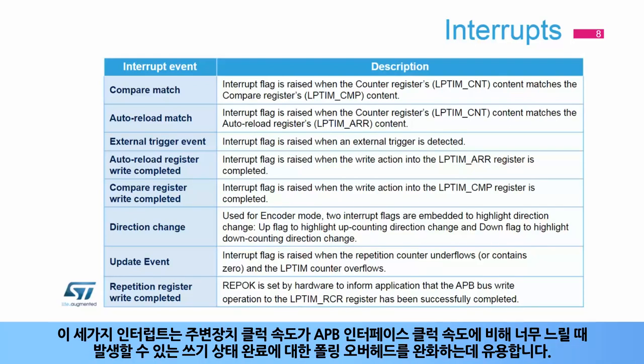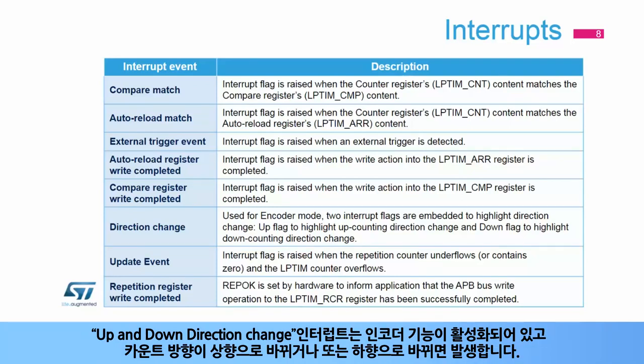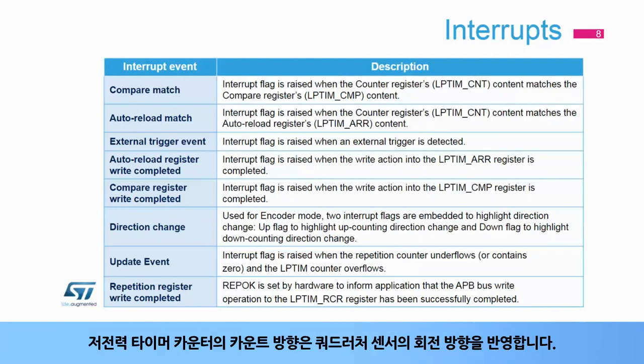These three interrupts are useful in mitigating the overhead of polling on the status of writing to these registers when the peripheral core clock is too slow compared to the APB interface clock. The up and down direction change interrupts are raised when the encoder mode function is enabled and the counting direction changes from up to down or vice versa. The counting direction of the low power timer's counter reflects the rotation direction of the quadrature sensor.